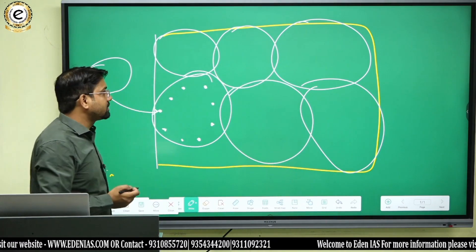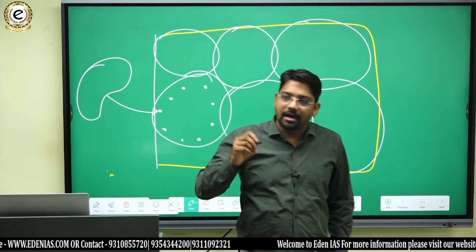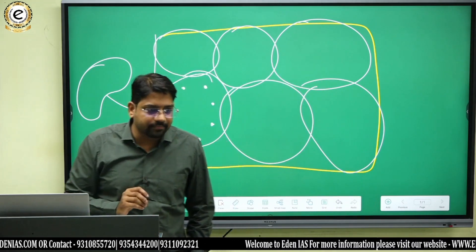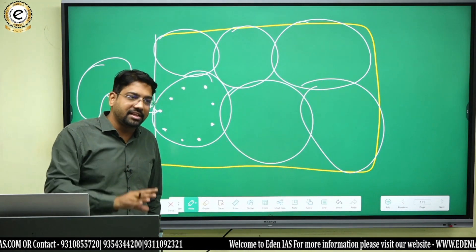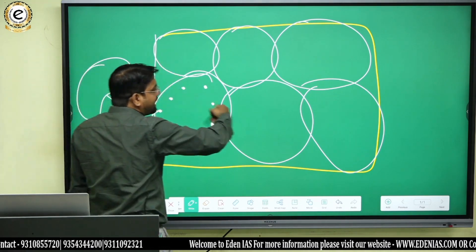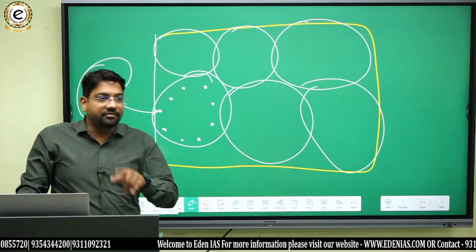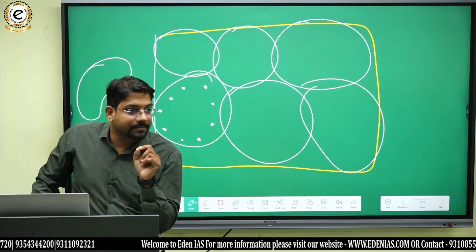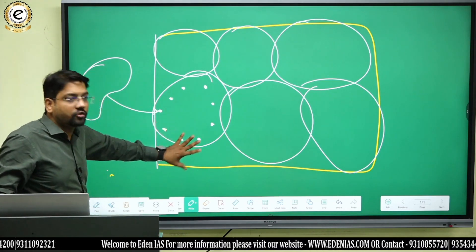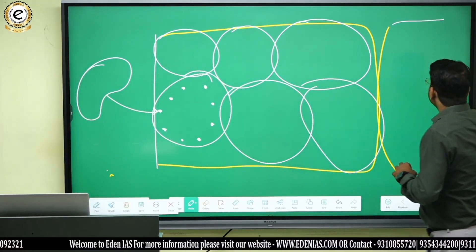Out of 552, two were reserved for Anglo-Indians, but this clause has been removed, so we now have 550 seats on which we can fight. The entire India is divided into 550 constituencies including UTs, and these 550 constituencies are further divided among the states such as UP, MP. If you sum this division it would be 550.